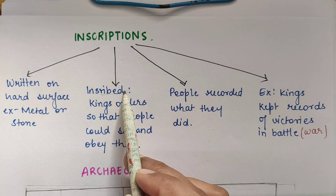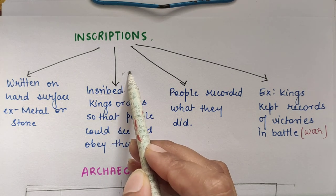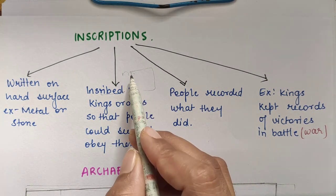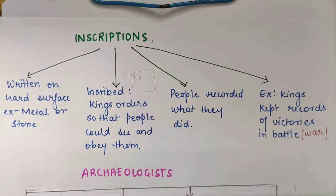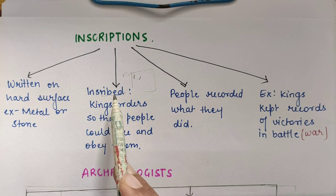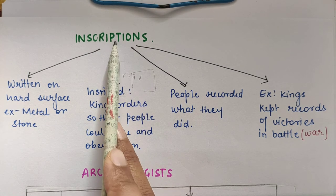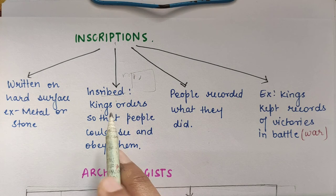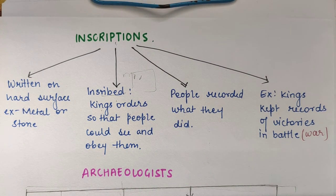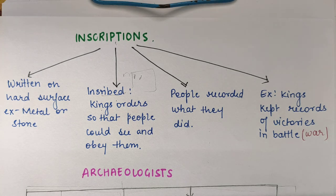What was inscribed on them? Since you cannot write on stone normally, they were carved — khod khod ke likha jaata tha. Kings ordered inscriptions so that people could see and obey them — Kings jo the, apne orders likhwaate the ki logon ko kya karna chahiye. Then us gaon mein jaake rakh dete the, so that people could read from the inscription and obey them — uske rules ko follow karo.